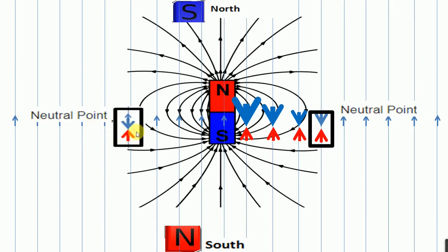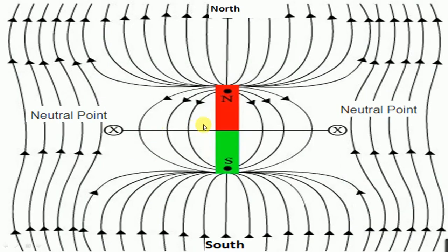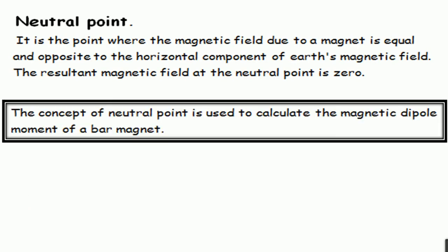That point is called the neutral point, where there is no net magnetic field. The neutral point is the point where the magnetic field of a bar magnet cancels the horizontal component of Earth's magnetic field, resulting in zero net field at that point. We can see the magnetic field of the earth going from south to north, and the neutral point appears on the equatorial line. We can use the concept of neutral point to calculate the magnetic dipole moment of a bar magnet.